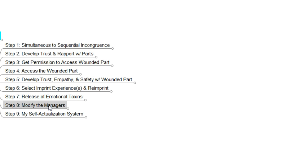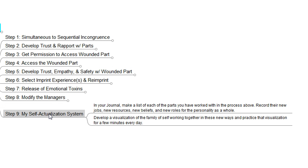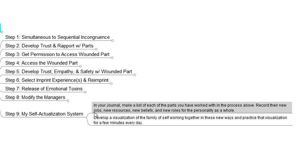As a result of the recovery process we will have created the self-actualization system. Remember that at the end of the assessment phase we had the self-preservation system — well, the self-actualization system is the growth mode, and this is what we want to have. Once we've completed the recovery phase, in a journal we make a list of the parts that were working with us in the process above. We record their new jobs, their new resources, and their new beliefs.